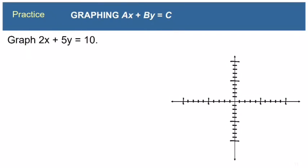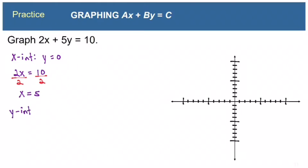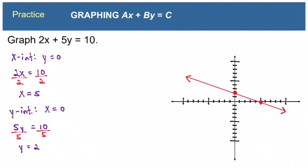Here are two extra examples not in the book. For 2x plus 5y equals 10, finding the x-intercept by letting y equal 0: 2x equals 10, so x equals 5. Finding the y-intercept by letting x equal 0: 5y equals 10, so y equals 2. The x-intercept is (5, 0) and the y-intercept is (0, 2). Connect the dots with a straight line. Domain and range are both negative infinity to positive infinity.